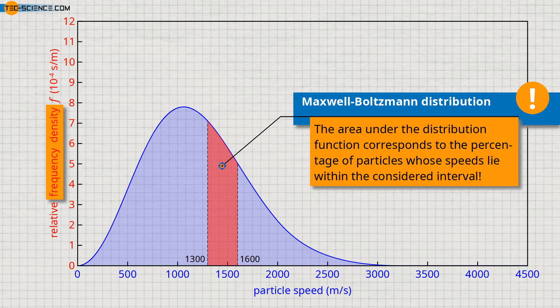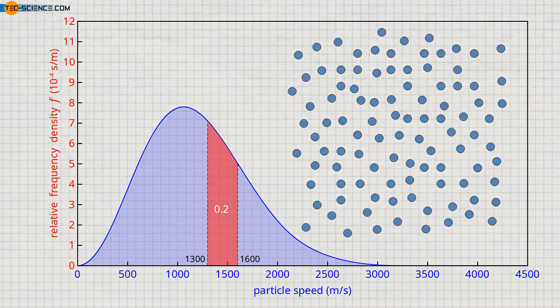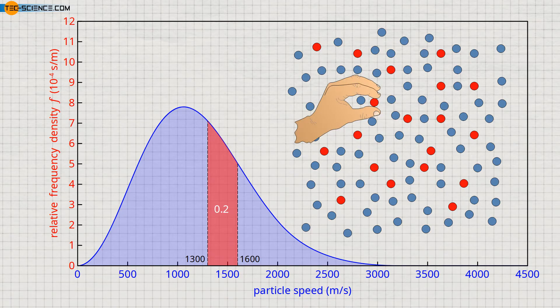Thus, one does not speak of the frequency, but of the frequency density — frequency per unit speed interval. Since it is not an absolute frequency, which means not a concrete number of molecules, but a percentage, it is called relative frequency density. For example, if there is an area of 0.2 in the range between 1300 and 1600 meters per second, this means that 20% of the molecules have a speed within this range. If one randomly selects 100 molecules in this gas, then 20 molecules would be among them whose speeds lie within this interval. The probability of catching a particle whose speed lies within this interval would thus be 20%.